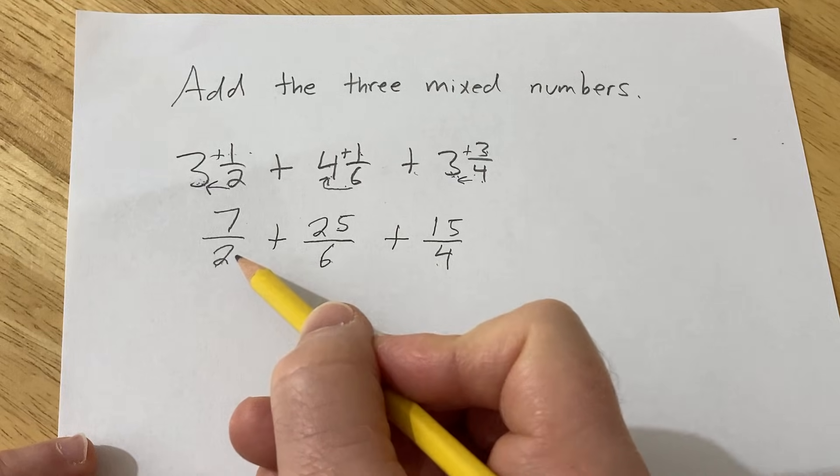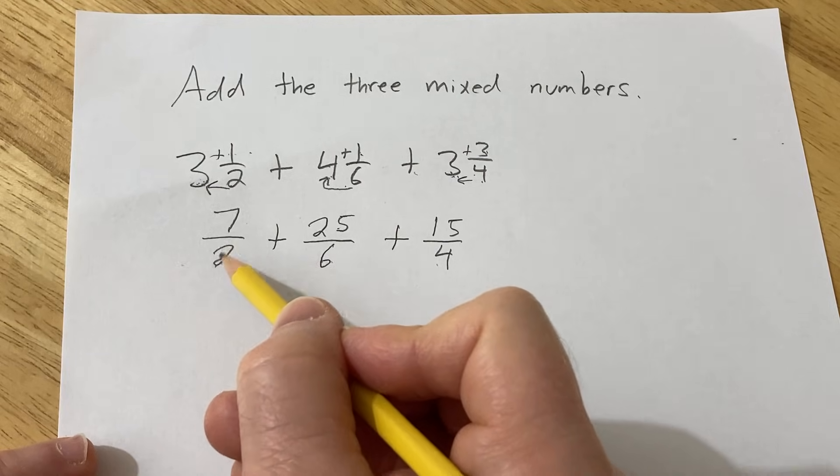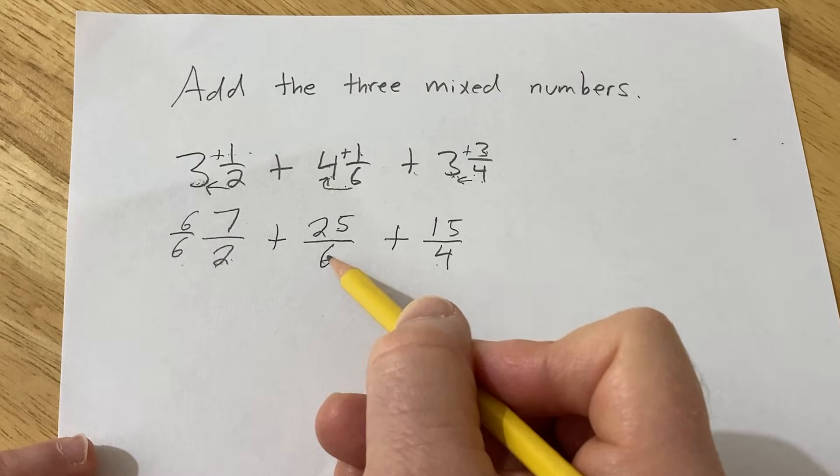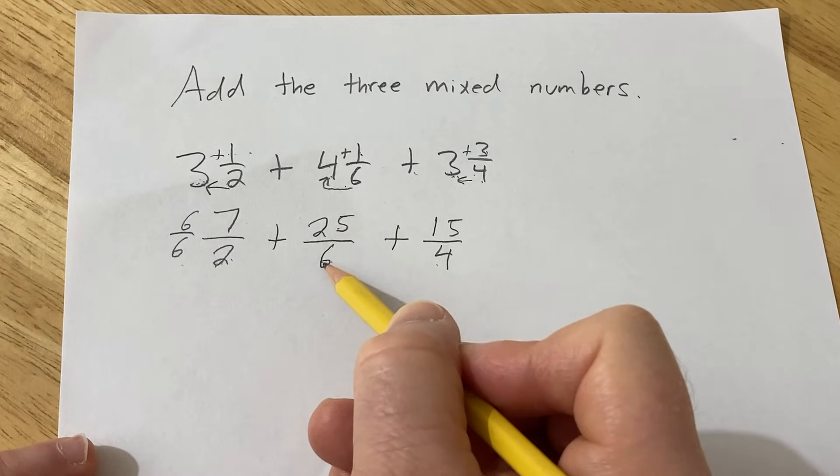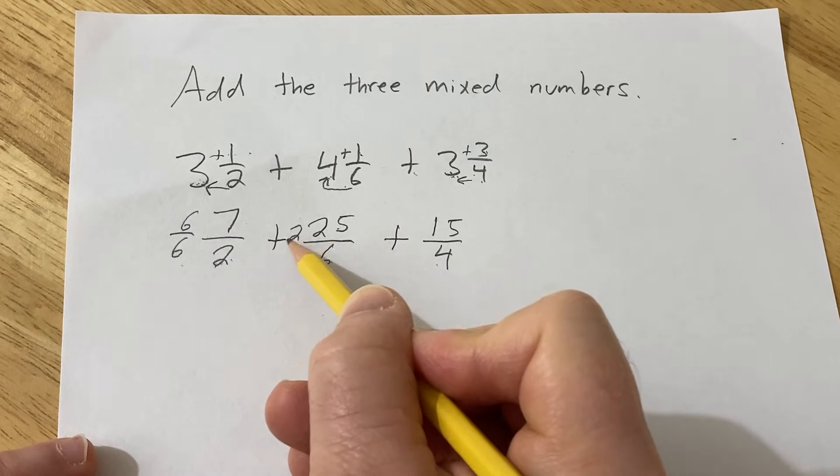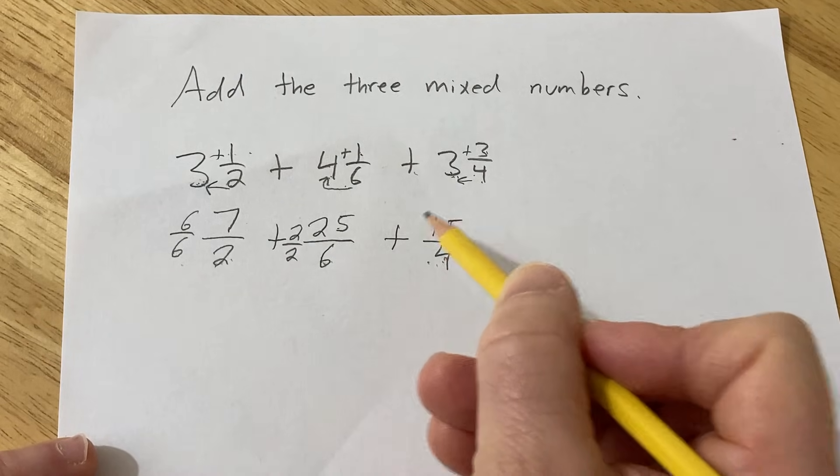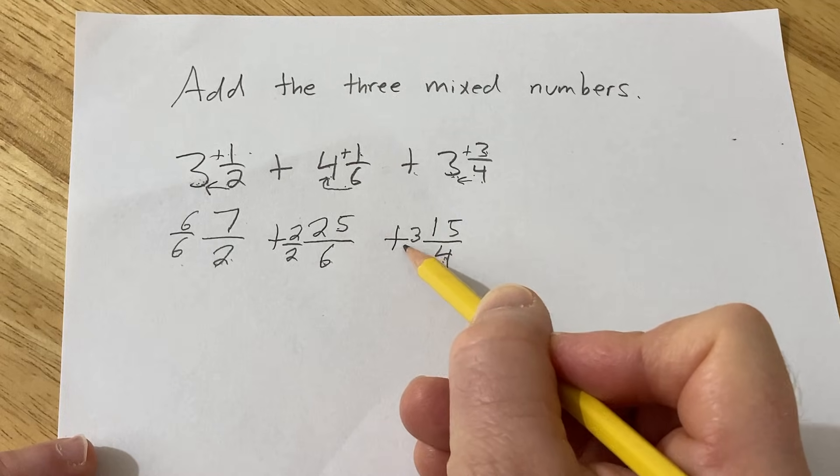So to make this a 12, we're missing a 6, because 6 times 2 is 12. So we multiply by 6 over 6. To make this a 12, we need a 2, because 2 times 6 is 12. So we multiply by 2 over 2. To make this a 12, we're missing a 3, because 3 times 4 is 12. So we multiply by 3 over 3.